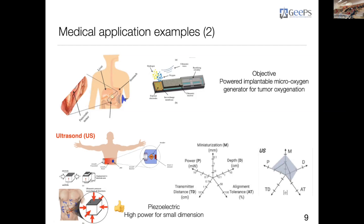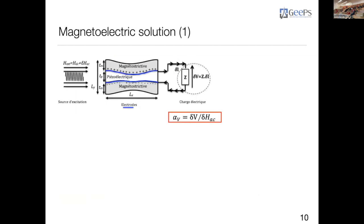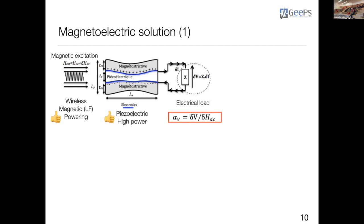The solution we propose is the magneto-electric solution. A magneto-electric composite is composed of a piezoelectric element and a magnetostrictive element. The source excitation is magnetic — we use low-frequency wireless magnetic excitation and also piezoelectric high-power coupling. The key output is the magneto-electric coefficient, which is the ratio between the voltage across the piezoelectric and the dynamic magnetic field, evaluated at a specific static bias point.